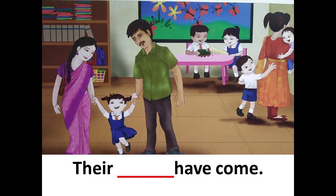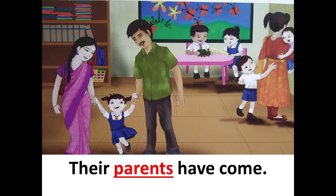Their dash — their who? Who can you see with the children in the picture? Their parents have come. Their parents have come. In this picture, you can see there are children and also their mummy daddy, means their parents, can be seen in this picture.